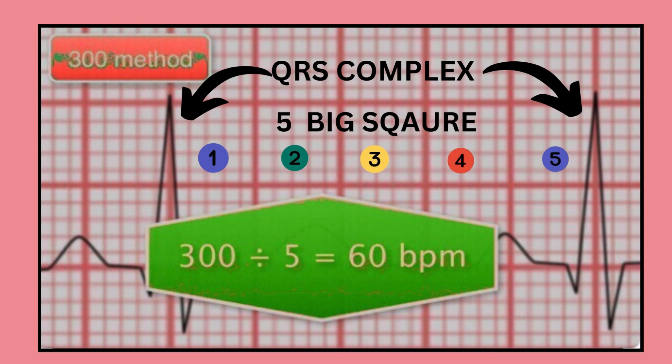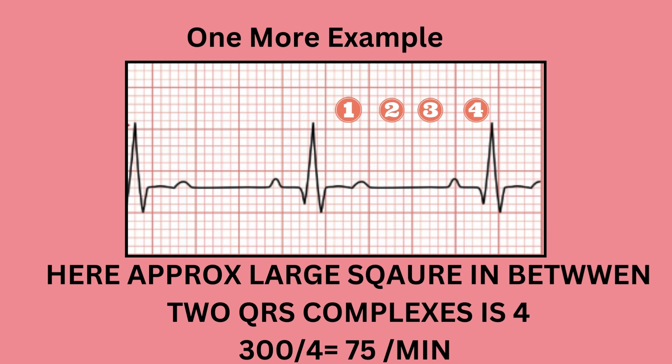Here in this picture you can see that there are 5 big boxes between 2 consecutive QRS complexes. To calculate the heart rate, we divide 300 by 5, therefore the heart rate is 60 per minute in this ECG. One more example: here in this ECG there are 4 big boxes between 2 consecutive QRS complexes, therefore 300 divided by 4 equals 75 per minute.